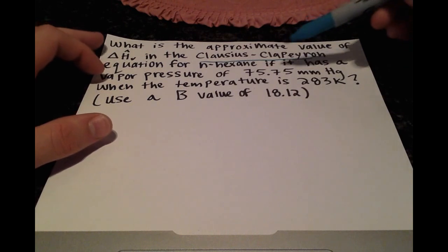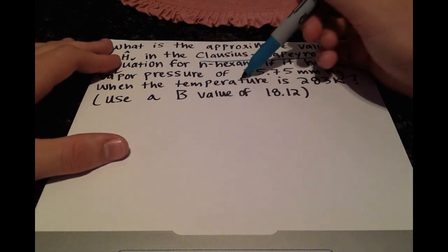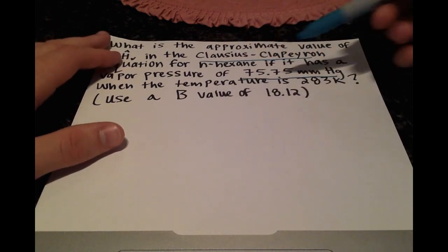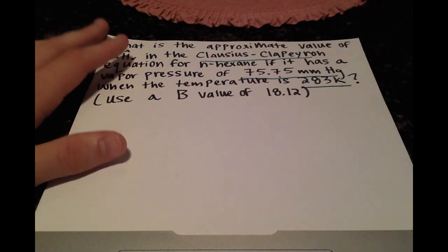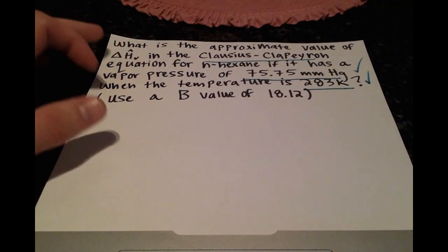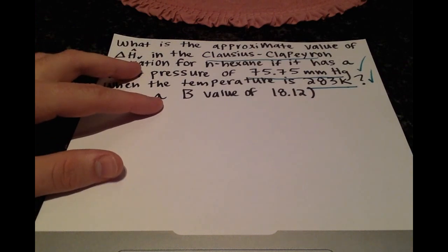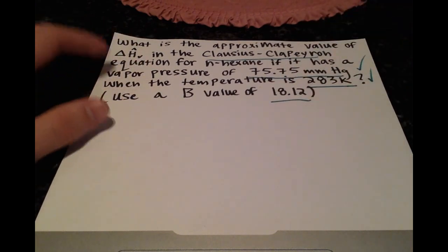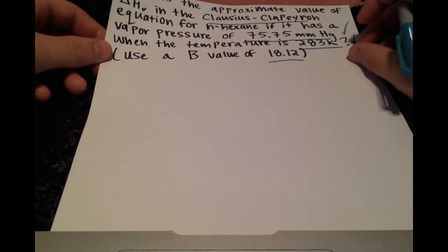We're given the vapor pressure is 75.75 millimeters of mercury, and the temperature is 283 Kelvin, so this is good. We have both of our correct units, and we have a b constant of 18.12. So I'll just rewrite the equation.